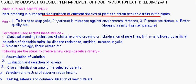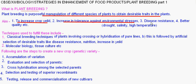The aims of plant breeding are: to increase crop yield, increase tolerance against environmental stresses, disease resistance, and better quality. Environmental stresses include drought, salinity, high temperature, etc.